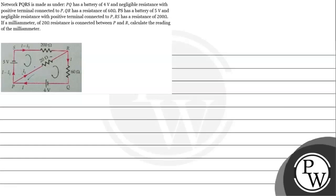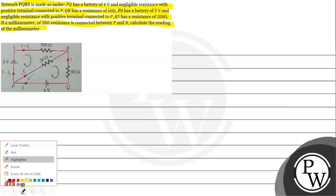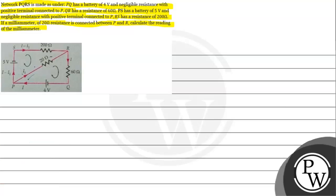Let's solve a given question. The question says network PQRS is made as under: PQ has a battery of 4 volt and negligible resistance with positive terminal connected to P. QR has a resistance of 60 ohm. PS has a battery of 5 volt and negligible resistance with positive terminal connected to P. RS has a resistance of 200 ohm. If a milliammeter of 20 ohm resistance is connected between P and R, calculate the reading of the milliammeter.